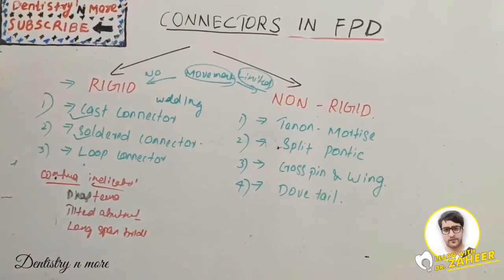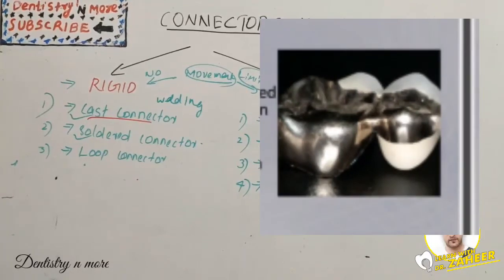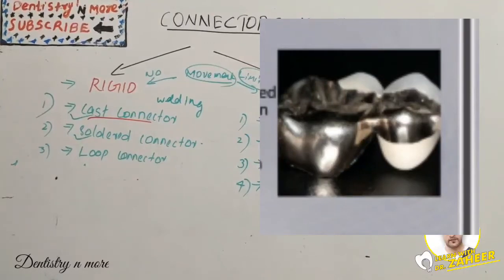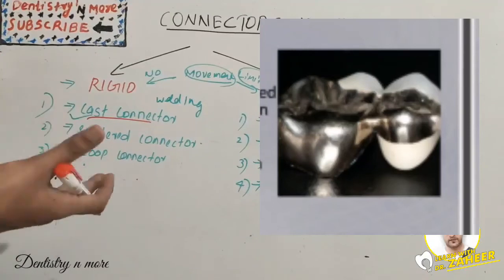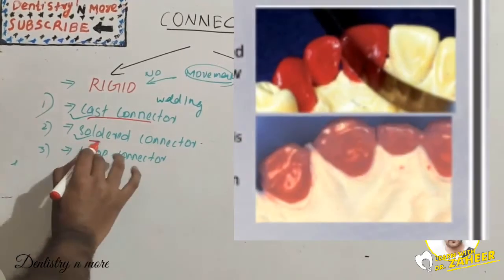The first type is the cast connector. It is shaped in wax as part of the multi-unit wax pattern, which is convenient and minimizes lab procedure steps — it includes the retainer, pontics, and connector as a single unit. However, the fit of individual retainers may be adversely affected because distortion more easily results when a multi-unit wax pattern is removed from the die system.